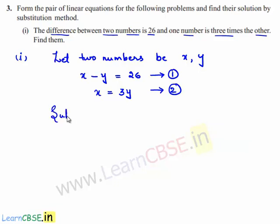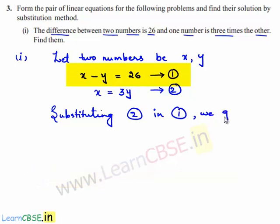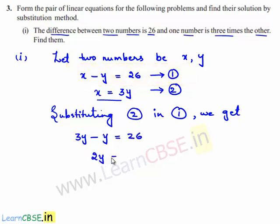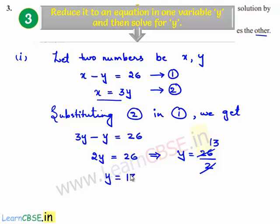Substituting equation number two in equation number one, we get: in place of x we substitute 3y, so 3y minus y is equal to 26. Three y minus y is nothing but 2y, so 2y is equal to 26. That implies y is equal to 26 divided by 2, which gives y is equal to 13.